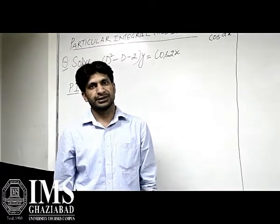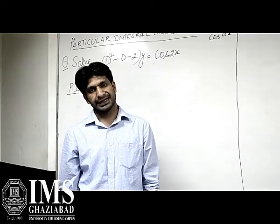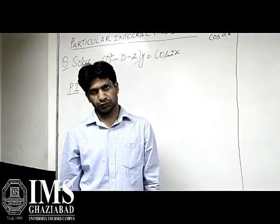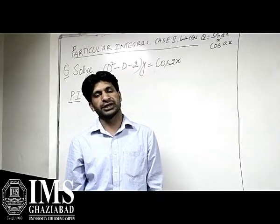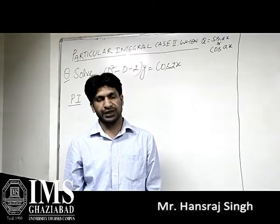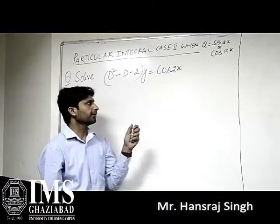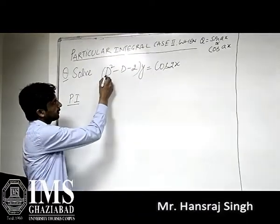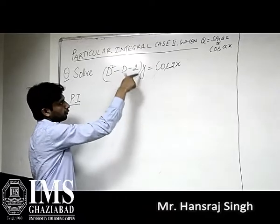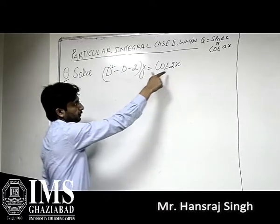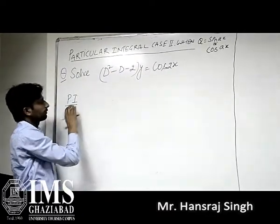Hello friends. Today we will discuss particular integral case 2, where Q equals cos(ax), and the denominator on putting D² equals to minus a² is not equal to zero. The problem is: (D² - D - 2)y = cos(ax). This is the problem with particular integral.